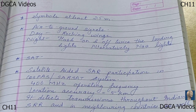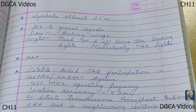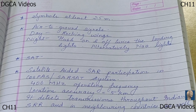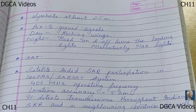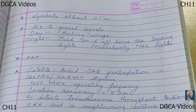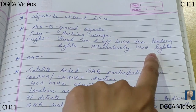Air-to-ground signals will be as follows: in the daytime, by rocking the aircraft wings; and at night during darkness, by flashing the aircraft's landing lights on and off twice, or alternatively the navigation lights.